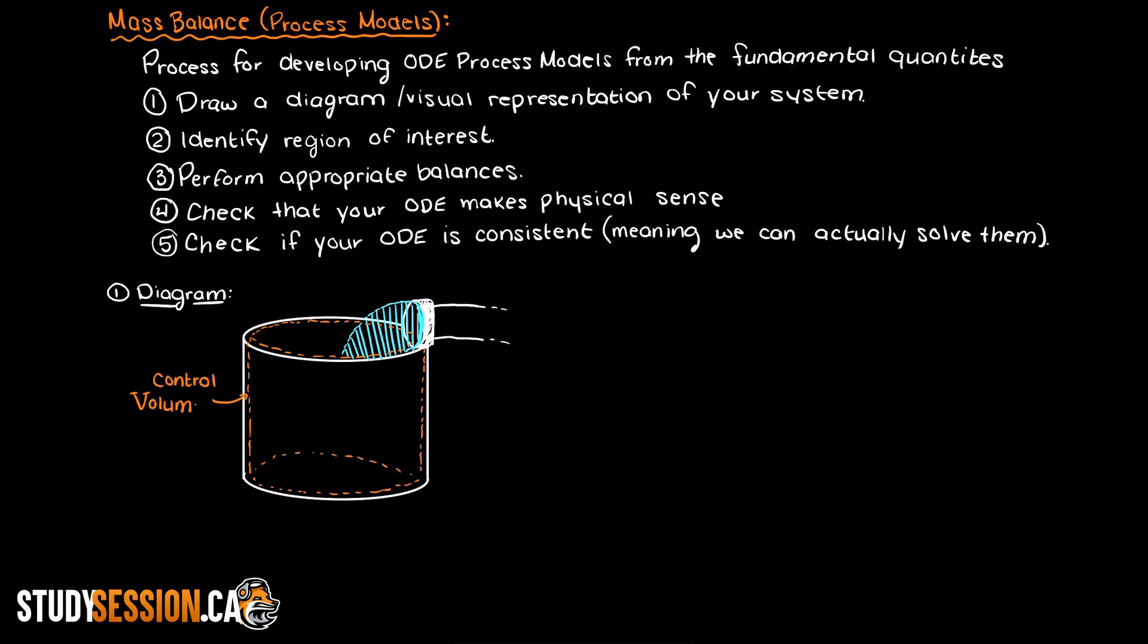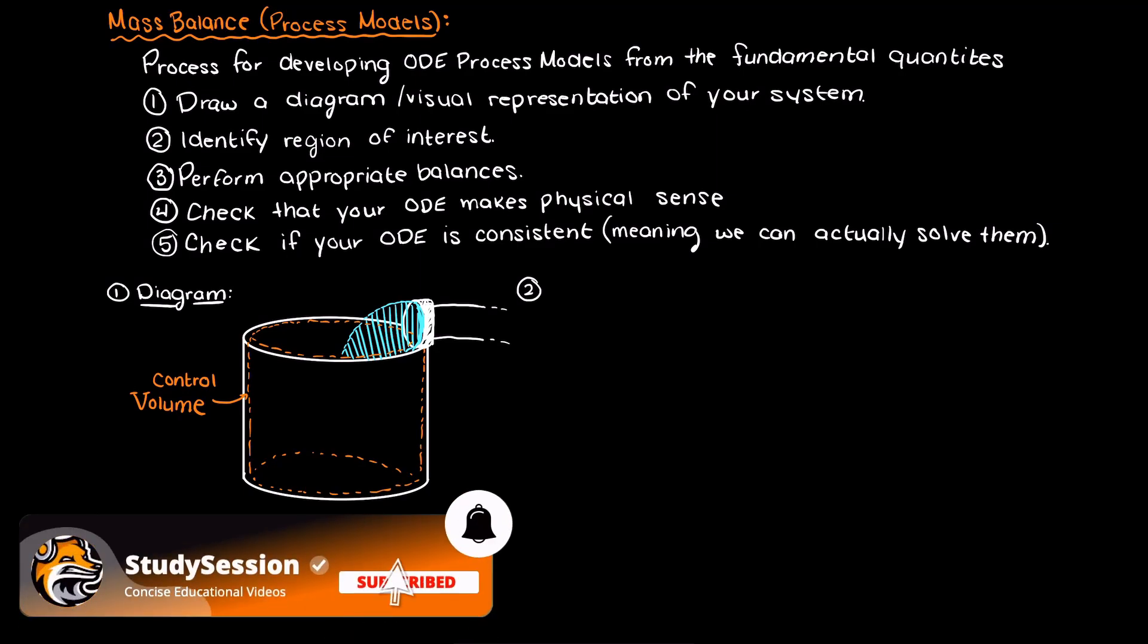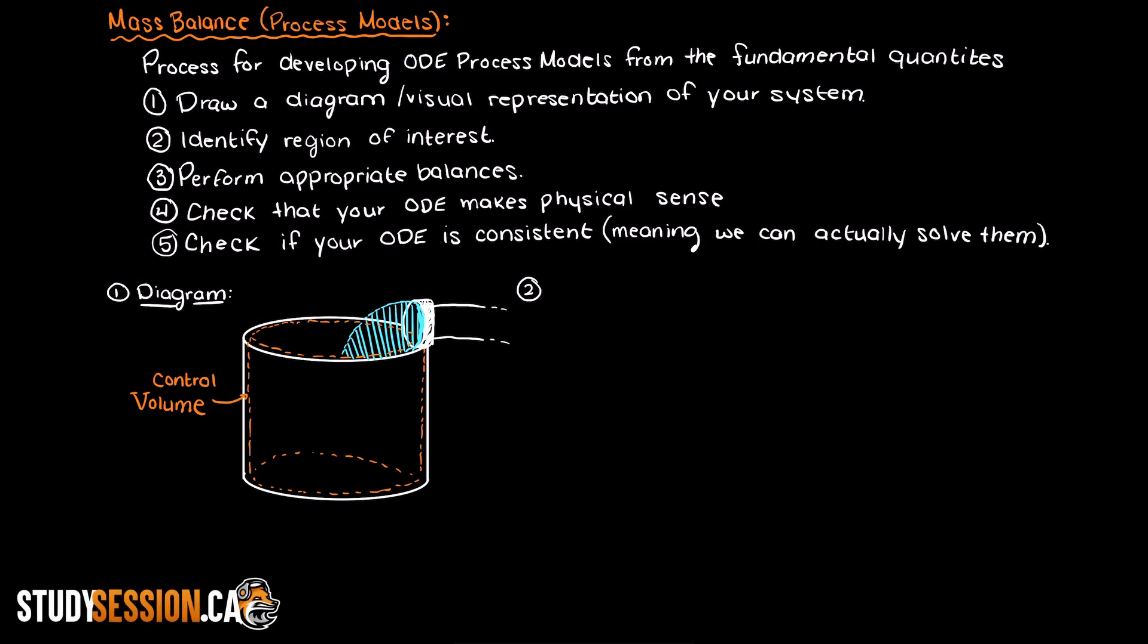So let's draw a quick little diagram here as that is the first thing on our checklist. Then to begin any balance problem, we need to identify our area of interest. That is what area or region we should be observing a potential change in the accumulation of. Well, for us, it makes sense to observe the bucket as a whole, right? So it is best to draw a little dashed line and denote that this is our control volume, also known as our volume of interest. So now that we know where we are observing the changes in our system, let's write our general balance equation that we talked about in a previous video.